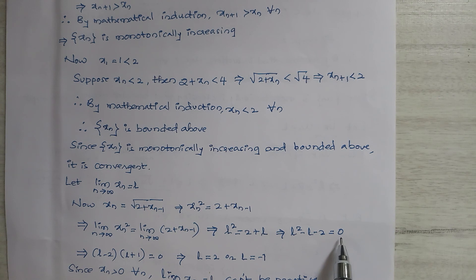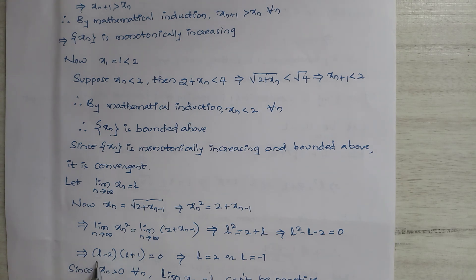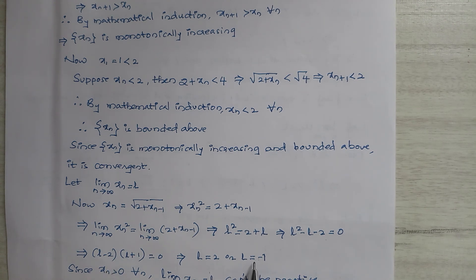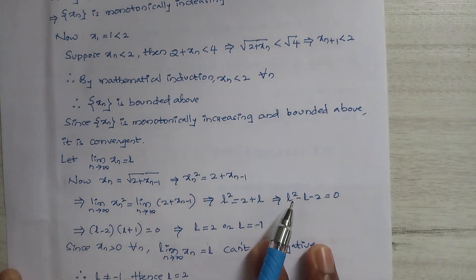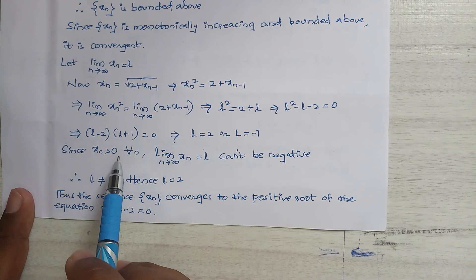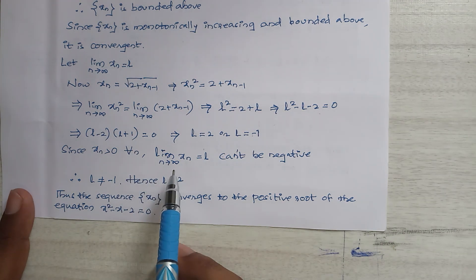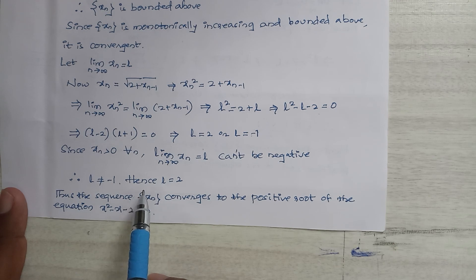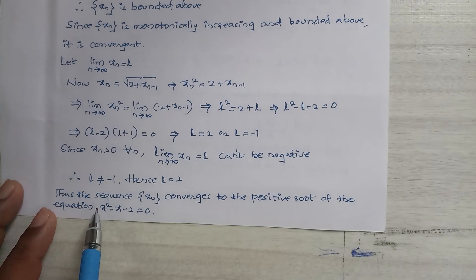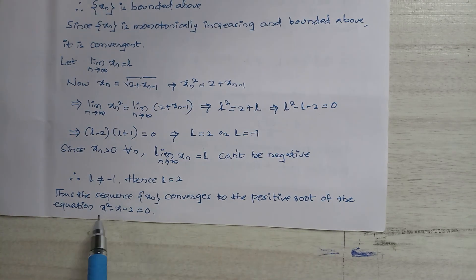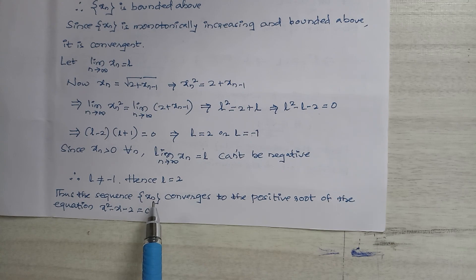The equation L² = 2 + L gives L² - L - 2 = 0, which factors as (L - 2)(L + 1) = 0, so L = 2 or L = -1. Since xn is strictly greater than 0 for all n, the limit cannot be negative. Hence we take L = 2. Thus the sequence xn converges to the positive root of x² - x - 2 = 0, therefore xn converges to 2.